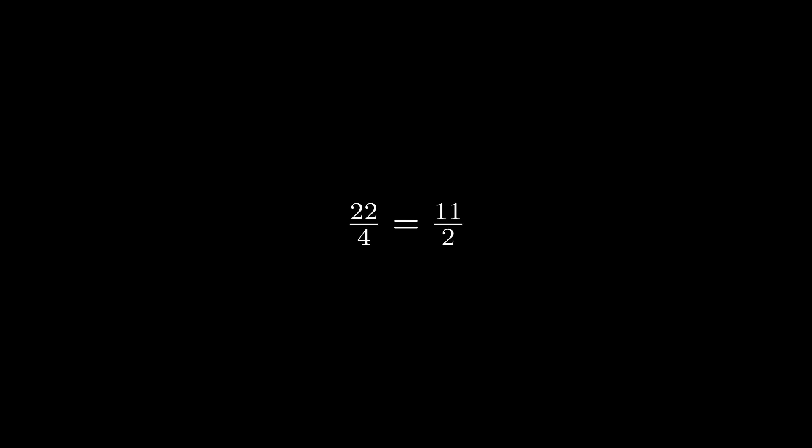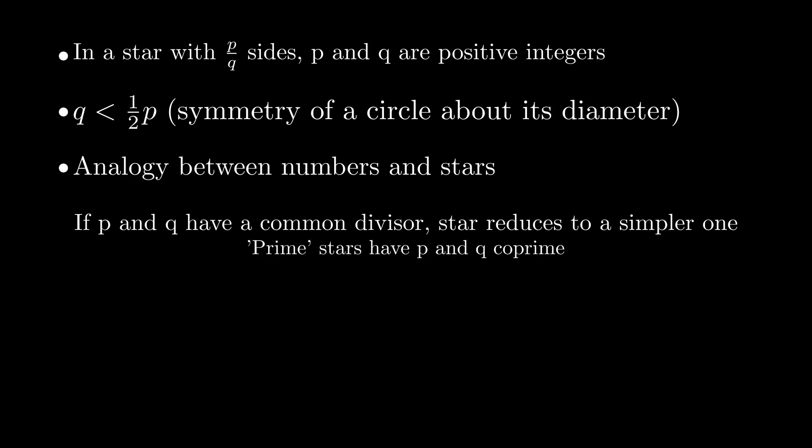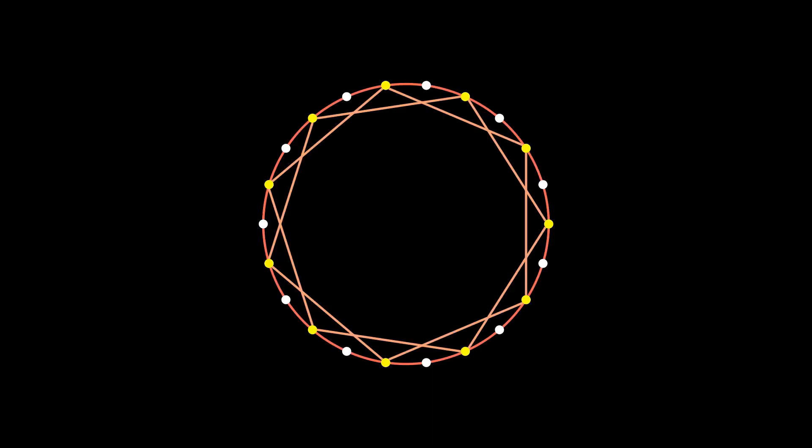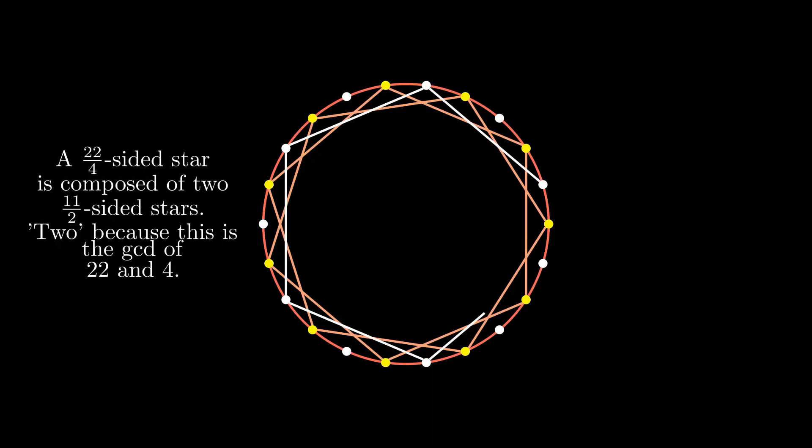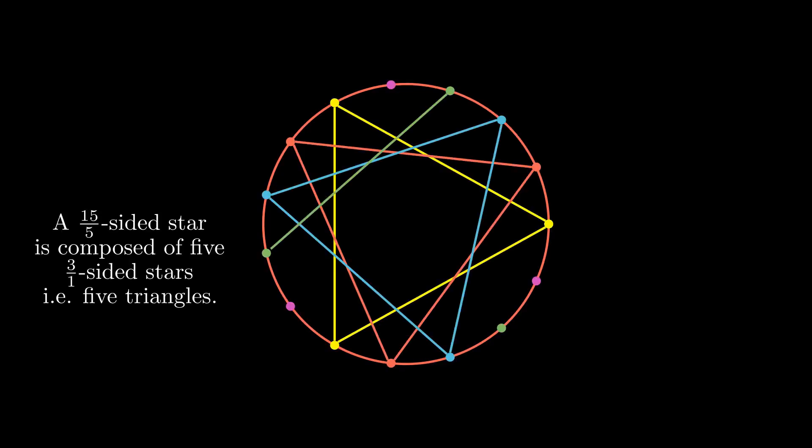In fact, whenever p and q are not co-prime, we won't hit all points. Actually, stars where p and q are co-prime are like prime numbers, in that they are the basic stars from which other stars, where p and q are not co-prime, can be composed. For example, the 22 by 4-sided star is different from the 11 by 2-sided one. It consists of two superposed 11 by 2-sided stars. And similarly, a 15 by 5-sided star is composed of five triangles.